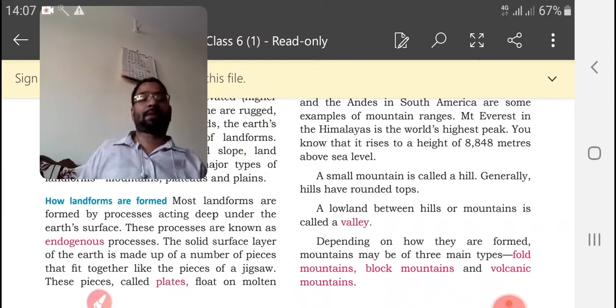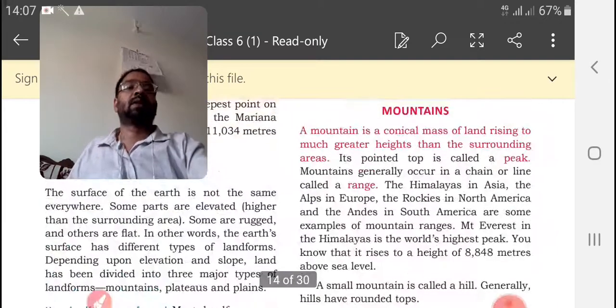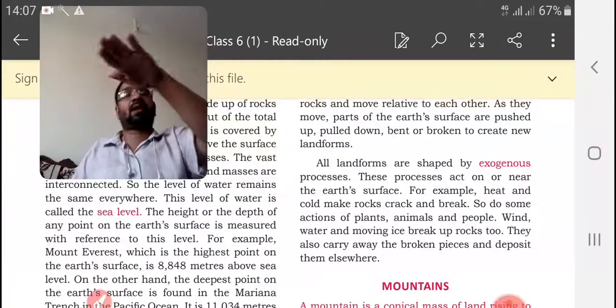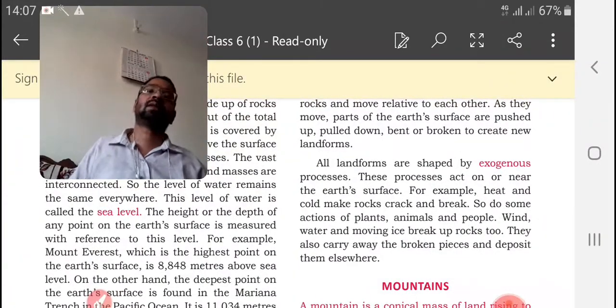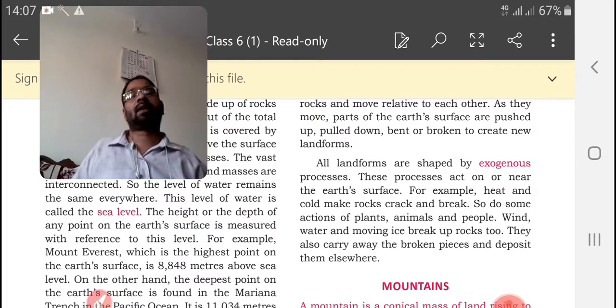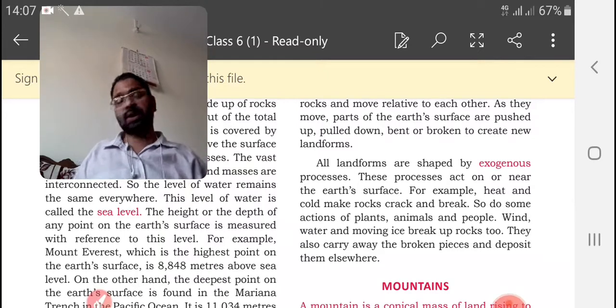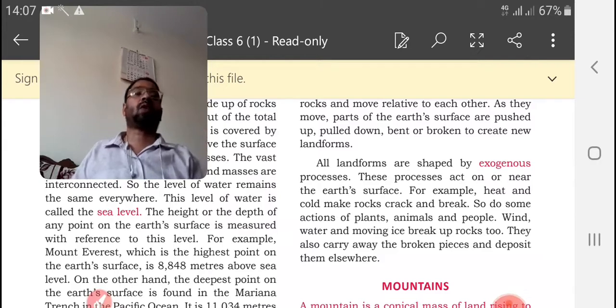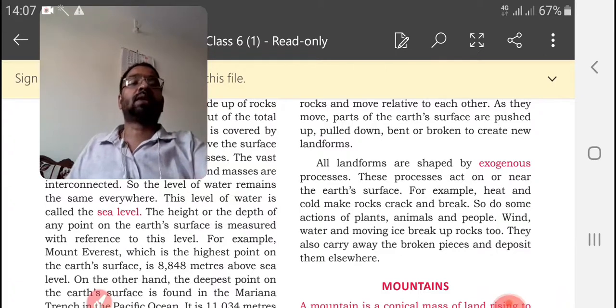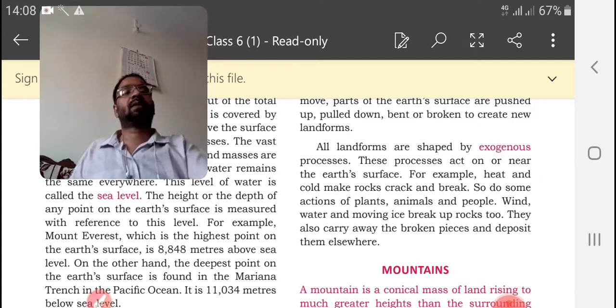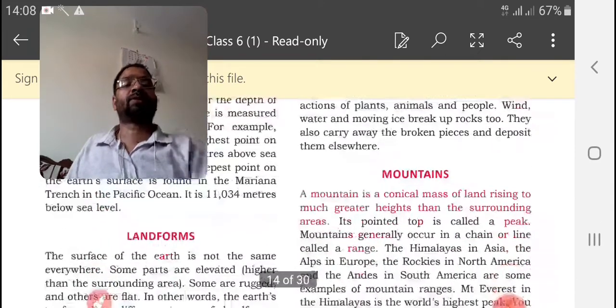Then exogenous process. What is the exogenous process? The action taking place outside the earth, outside the upper part of crust is known as exogenous process. Because of endogenous process the earth gets formed, only formation takes place. Because of exogenous process it gets shaped. Earth forms get shaped.